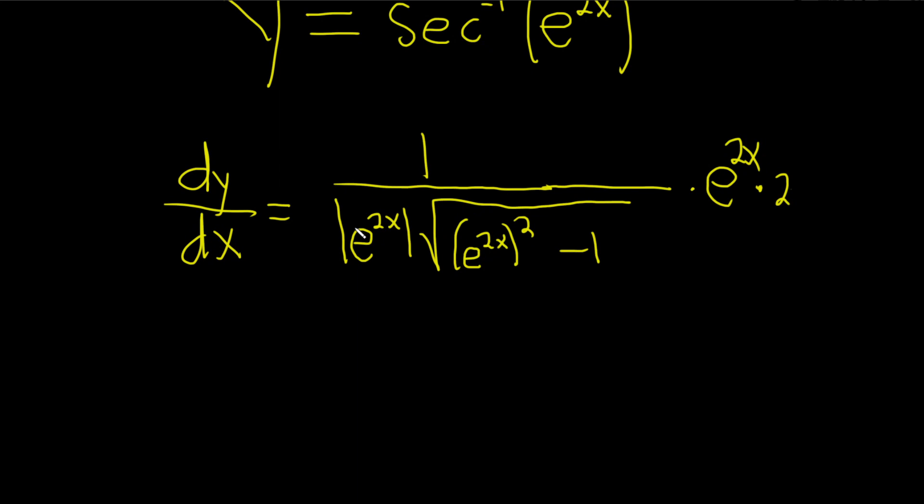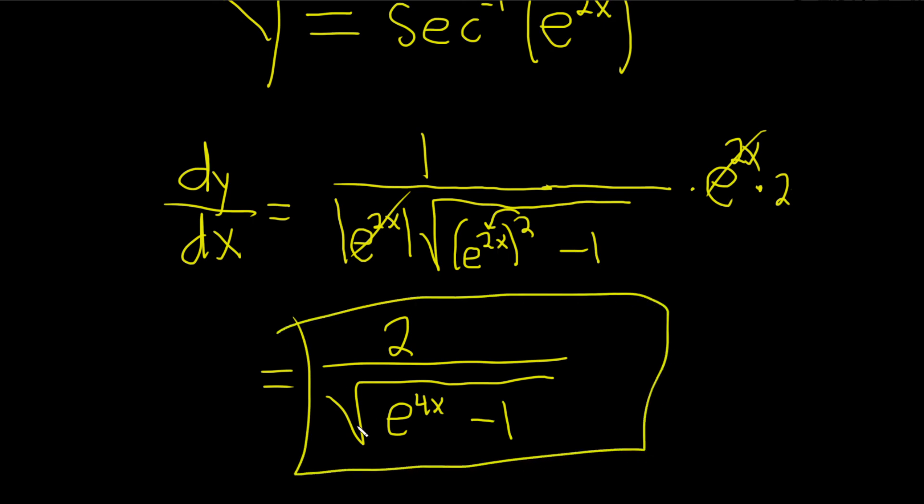We don't necessarily need these absolute values because e is positive, so you can actually just cancel these. We're left with 2 over square root. Here you can multiply the 2 times the 2x. That'll give us 4x and then minus 1, and that would be the final answer.